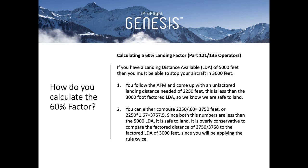In the first case, you follow the AFM and come up with an unfactored landing distance needed of 2,250 feet. This is less than the 3,000 foot factored LDA, so we know we are safe to land. Alternatively, you can either compute 2,250 divided by 0.6, which equals 3,750 feet, or 2,250 times 1.67, which equals 3,758 feet. Since both of these numbers are less than the 5,000 foot LDA, it is safe to land. It is overly conservative to compare the factored distance of 3,750 or 3,758 to the factored LDA of 3,000 feet, since you will be applying the rule twice.